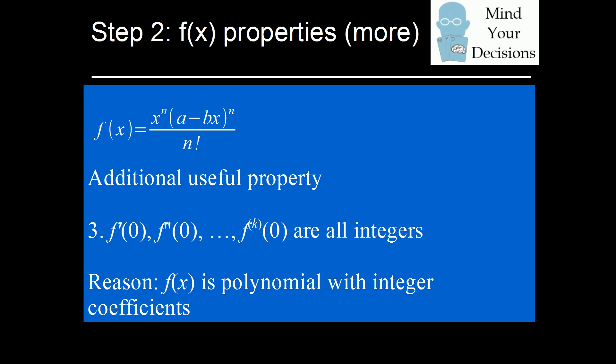The third useful property of f of x is that all of its derivatives — the first derivative, the second derivative, and so on — evaluated at zero will be an integer. This requires verification, but the general idea is that f of x is a polynomial of degree 2n with integer coefficients. So when you take the derivative and evaluate it at zero, you're going to end up with an integer value.